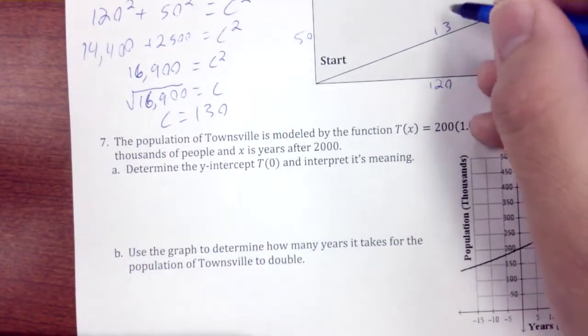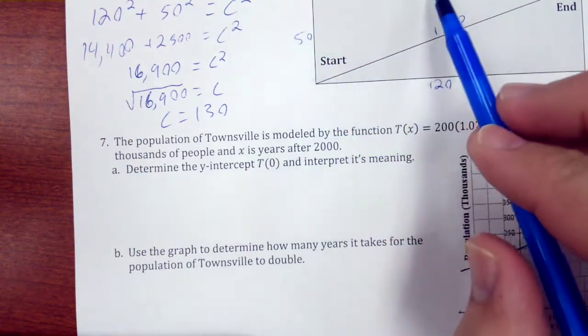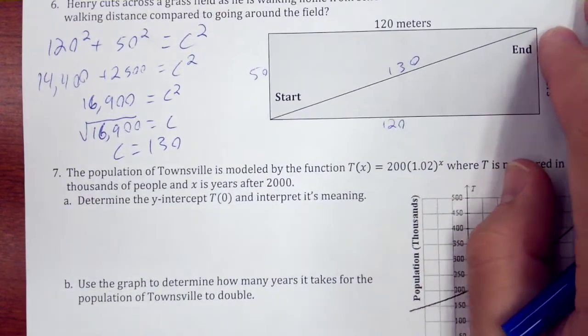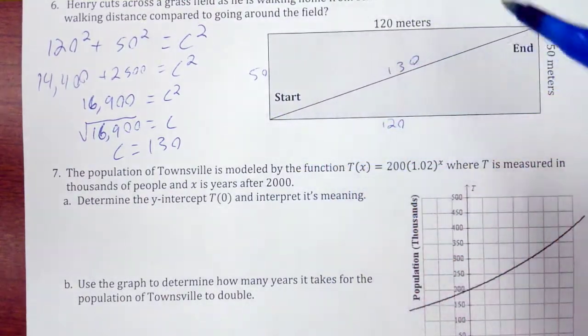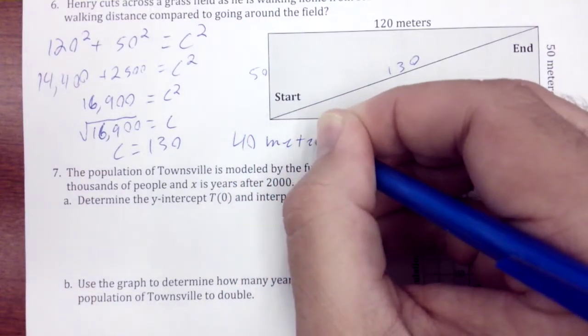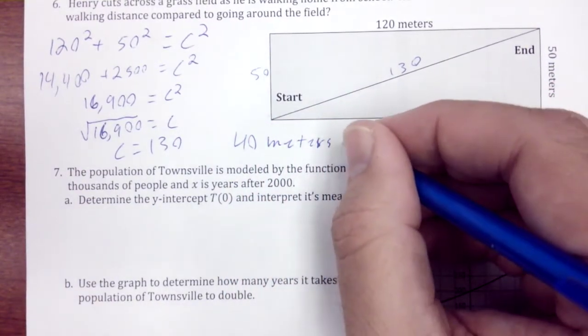So this is 130. So we have, we've walked 130, or Henry walks 130 as compared to 170. So, it is 40 meters shorter.